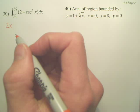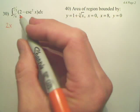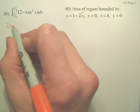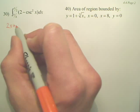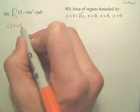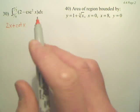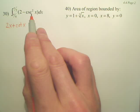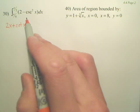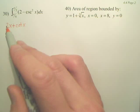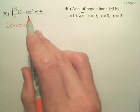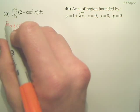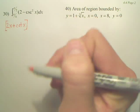It's negative cotangent, so you're going to end up with plus cotangent x. Because the derivative of cotangent gives you negative cosecant squared. It takes a bit to get used to those — you're going to have to memorize those.